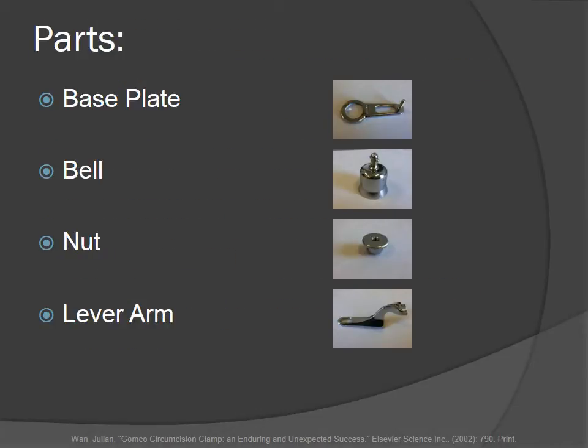There are four main parts of the GOMCO clamp: the base plate, the bell, the nut, and the lever arm.